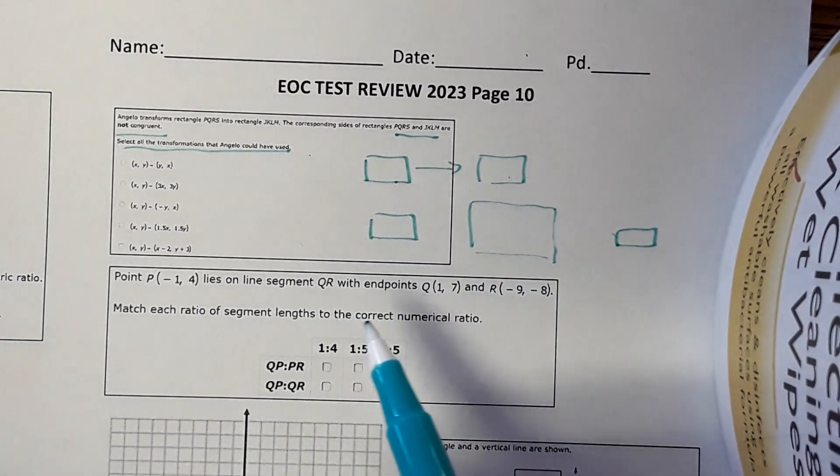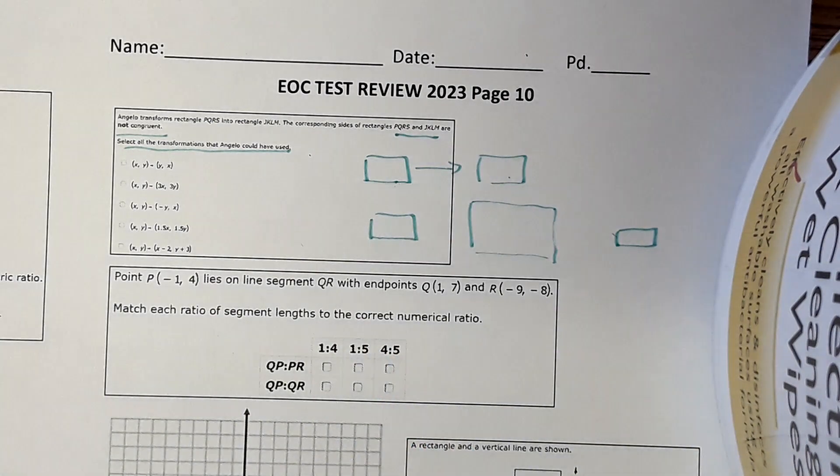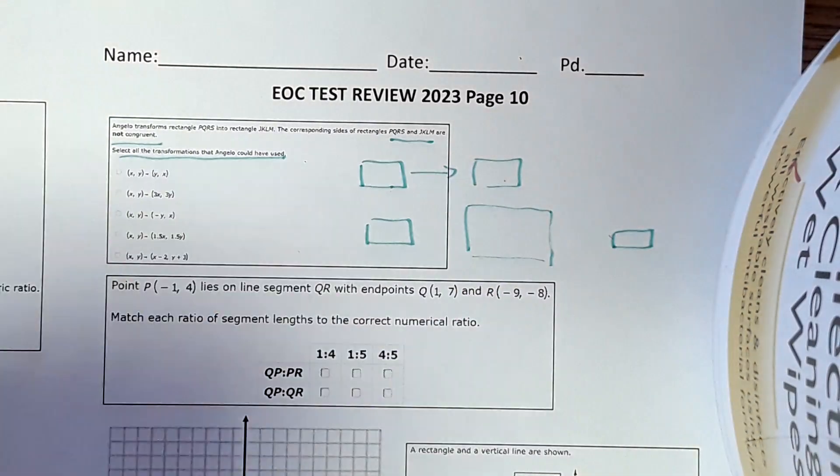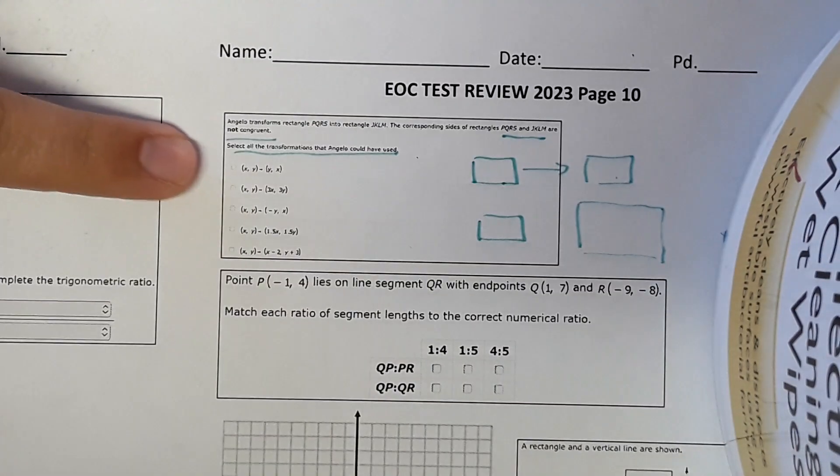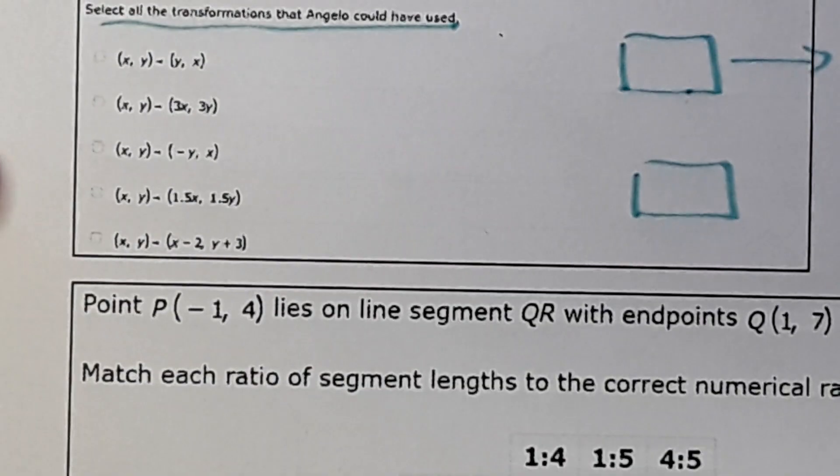When it grows or shrinks, then the dimensions would change. So looking at these answers, we're looking for something that's a dilation, because that would cause the dimensions to change. So let's see.